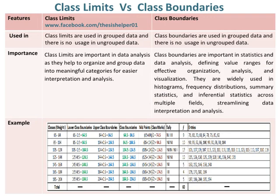Class limits are important in data analysis as they help to organize and group data into meaningful categories for easier interpretation and analysis. Whereas class boundaries are important in statistics and data analysis, defining value ranges for effective organization, analysis, and visualization.